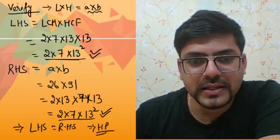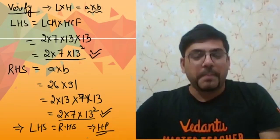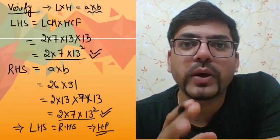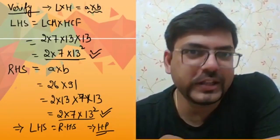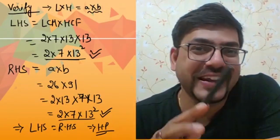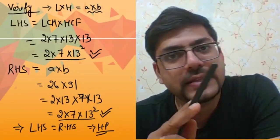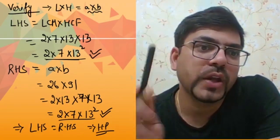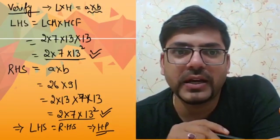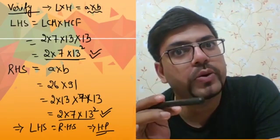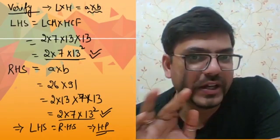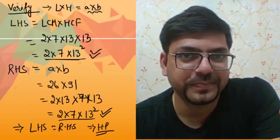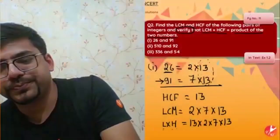For the remaining questions, I'll just tell you the HCF and LCM without showing the full multiplication, since you've already seen the method. On the LHS, write LCM × HCF, multiply them, and break into prime factors. On the RHS, multiply the numbers and break them into prime factors too. Both sides will turn out to be the same, so LHS = RHS, hence proved. Simple.